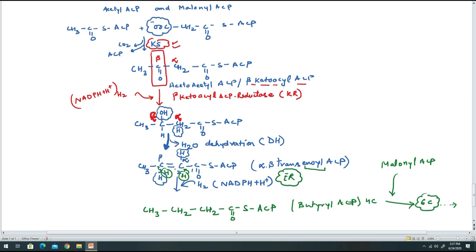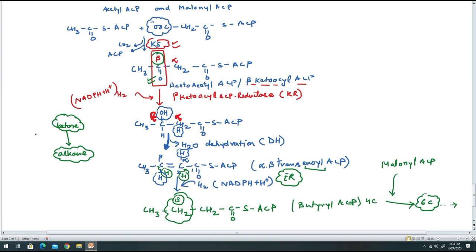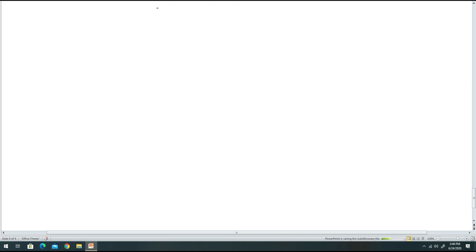The key observation is that the beta carbon, which initially carried a ketone group, is sequentially reduced to an alkane through KR, DH, and ER. This conversion of ketone to alkane at the beta position is the most important part of fatty acid synthesis to remember.